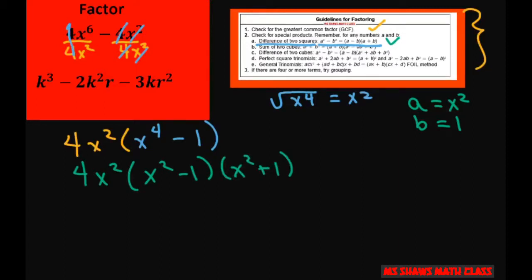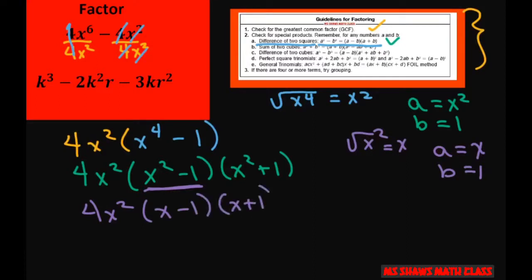But wait, we can also do it again. Because I can take the square root of x squared, and that just equals x. So we have a equals x, and b equals 1 again. So basically we have 4x squared. And you do the same thing. So it will be x minus 1 times x plus 1. And then we have x squared plus 1. So that means we have factored this completely. And we are done.